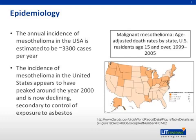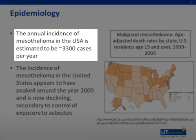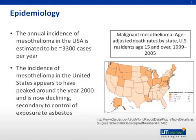Malignant mesothelioma is cancer of the pleura and, less commonly, the peritoneum, associated with exposure to asbestos. Incidence in the United States is estimated at 3,000 cases per year. More than 90% of cases are pleural, less than 10% peritoneal. Men have a five- to six-fold higher incidence than women. Worldwide incidence is increasing, although rates have leveled off in the United States and Scandinavia, where restrictions on asbestos exposure occurred earlier than in Western Europe and Australia.